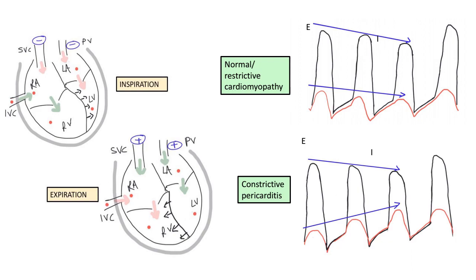Importantly, if we have to choose between these two, the best differentiator is the discordancy in the LV and RV pressure tracings with the different phases of respiration.